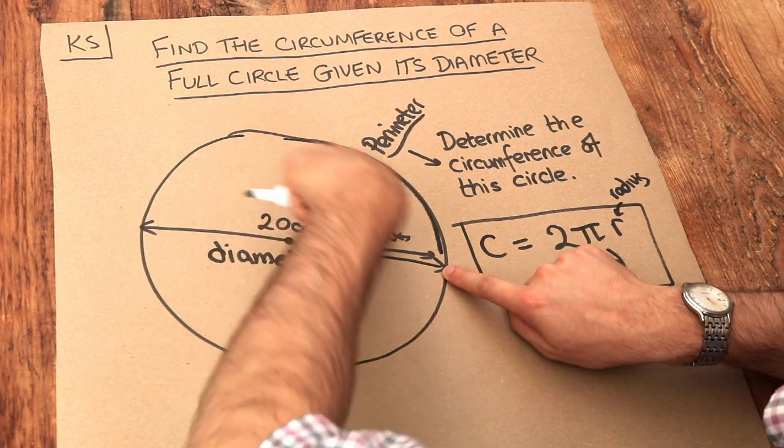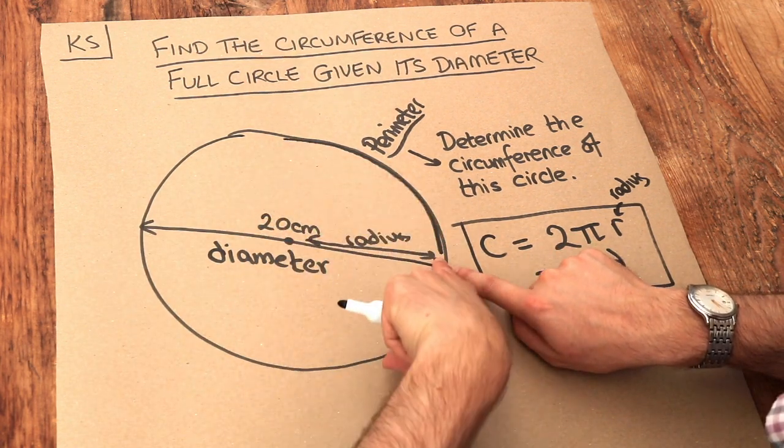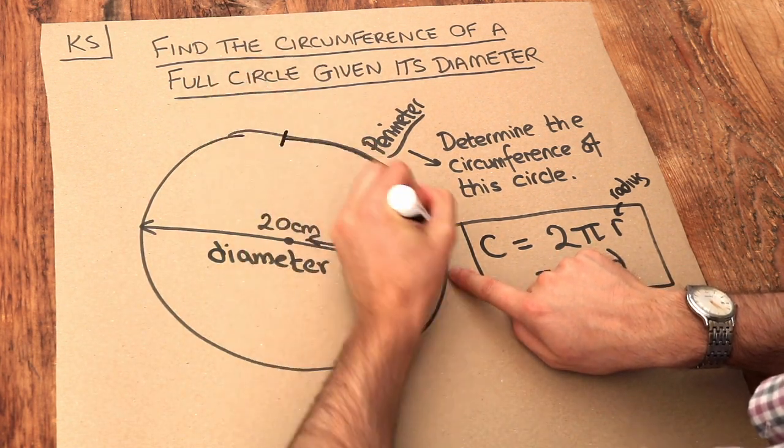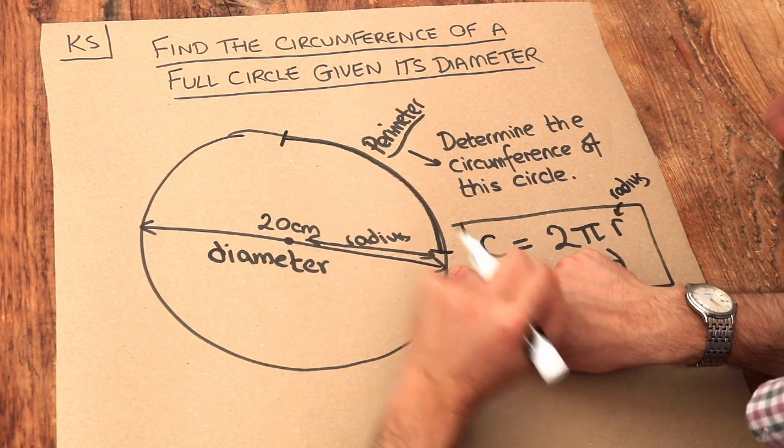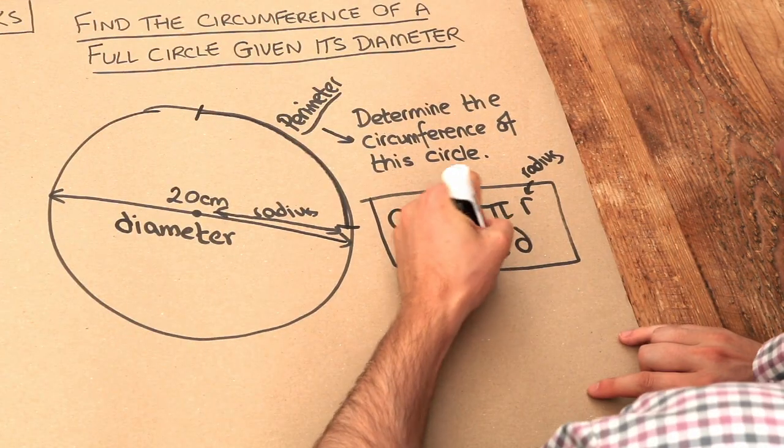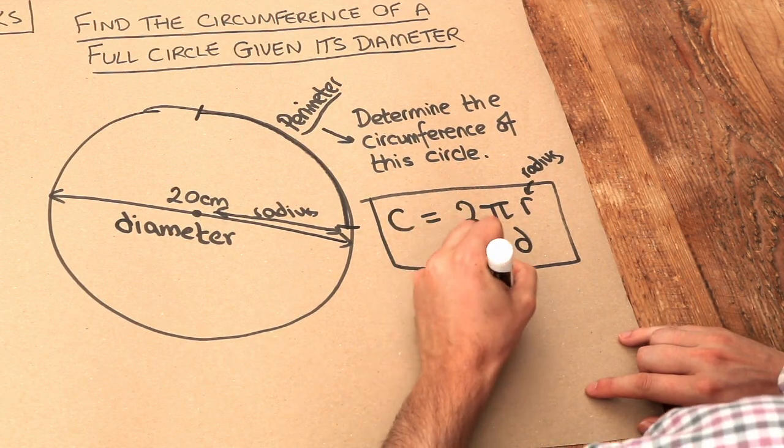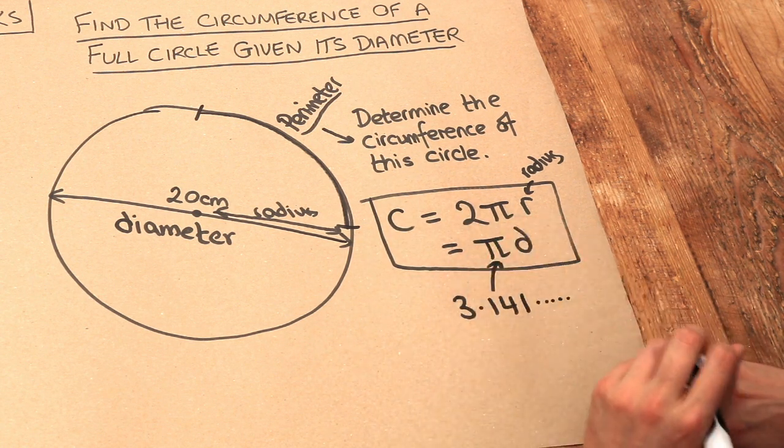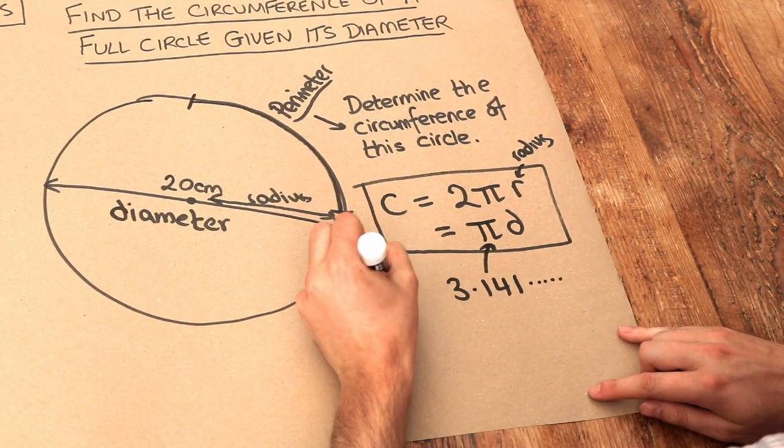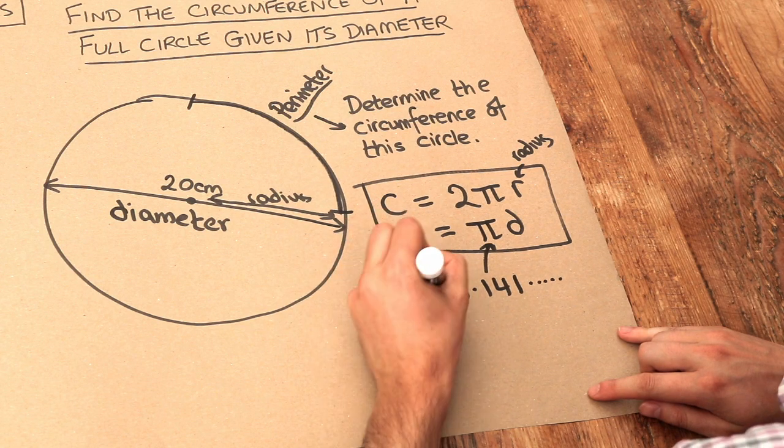That length here is roughly that. You might wonder, how many times can you go from here to here around the circle before you get back to the start? And it's just a bit more than 3. In fact, it's 3.14152, and so on. The digits go on forever. And that's a special number known as pi. It's a Greek letter.